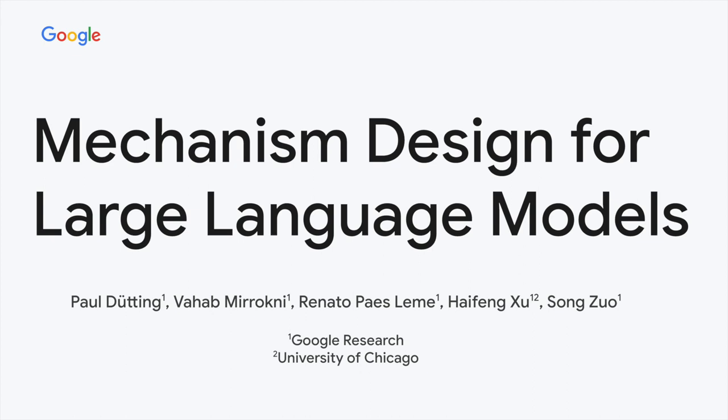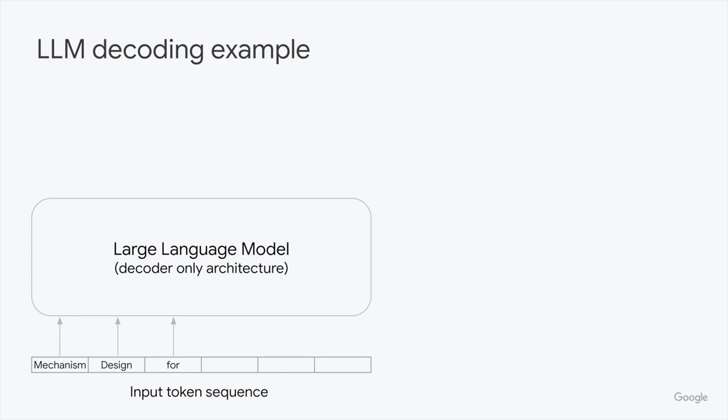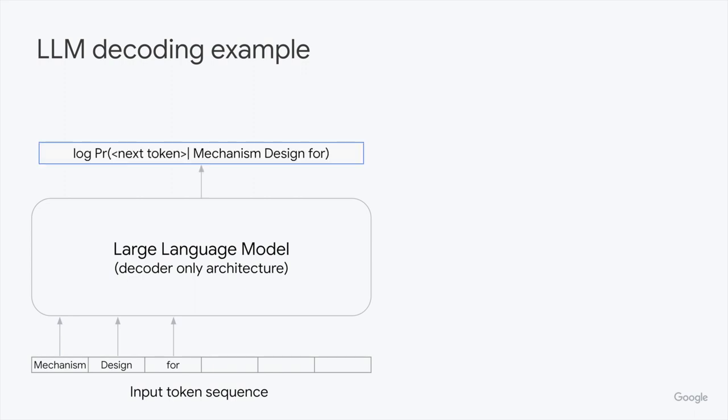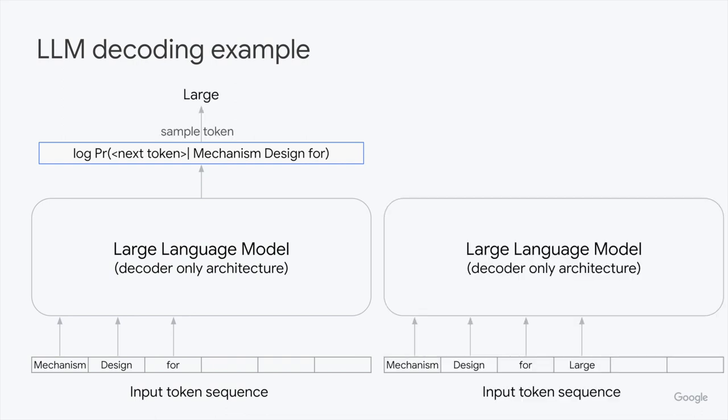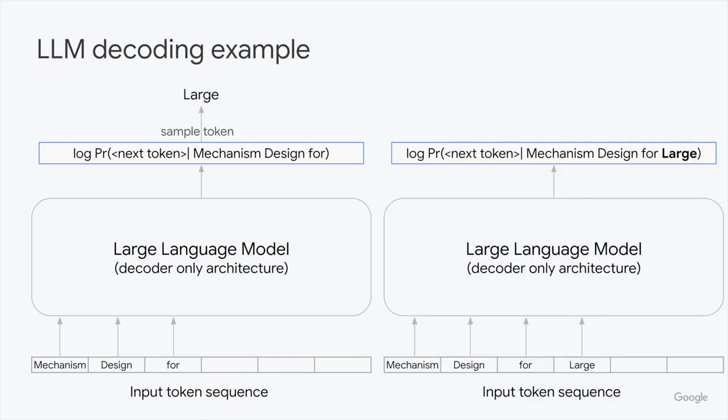In a traditional LLM, the generation is sequential. The model takes a token sequence as input and predicts the next token. This token is added to the sequence and the process repeats.